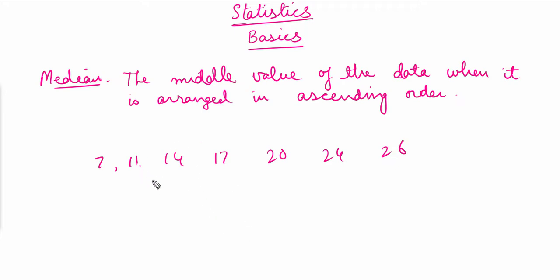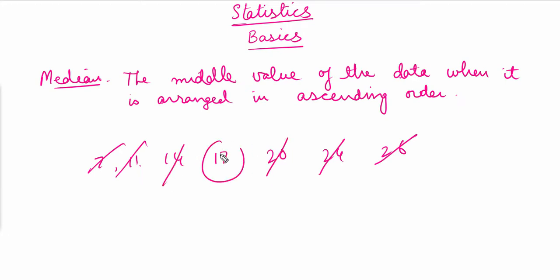So we cancel out numbers from each end — cancel this one, this one, cancel these two — and here we have the middle number. The median for this data is 17. So median is basically the middle value of any data.